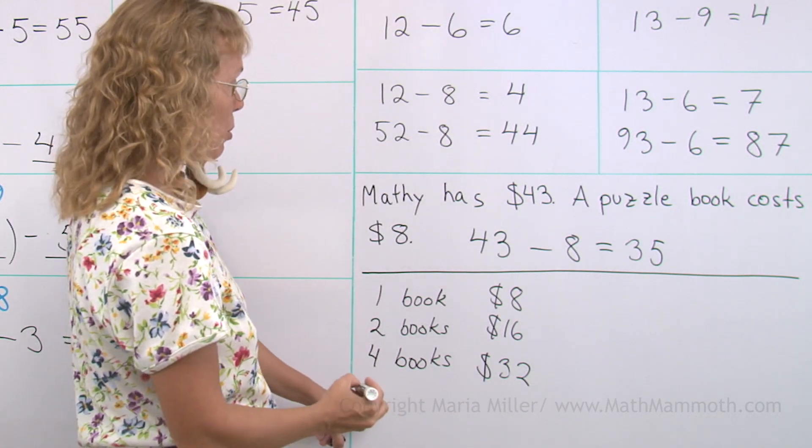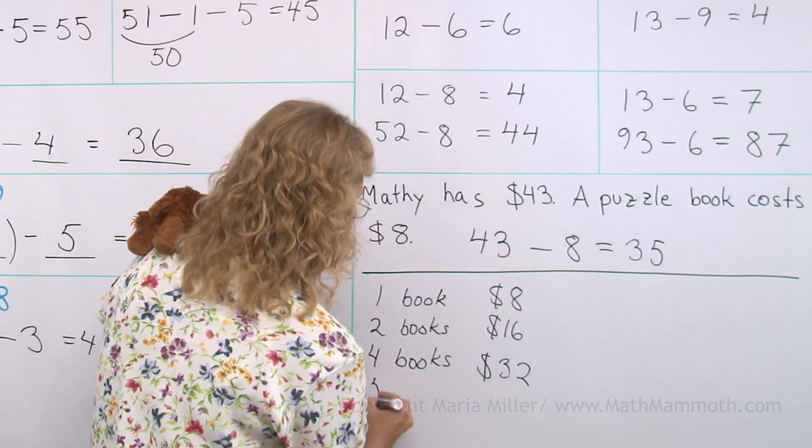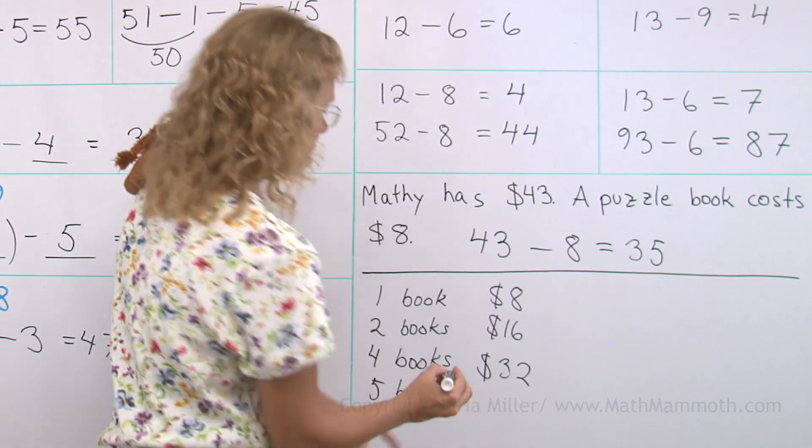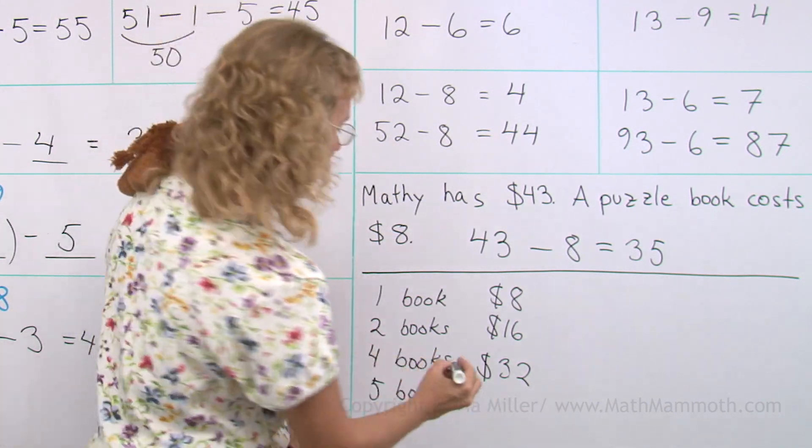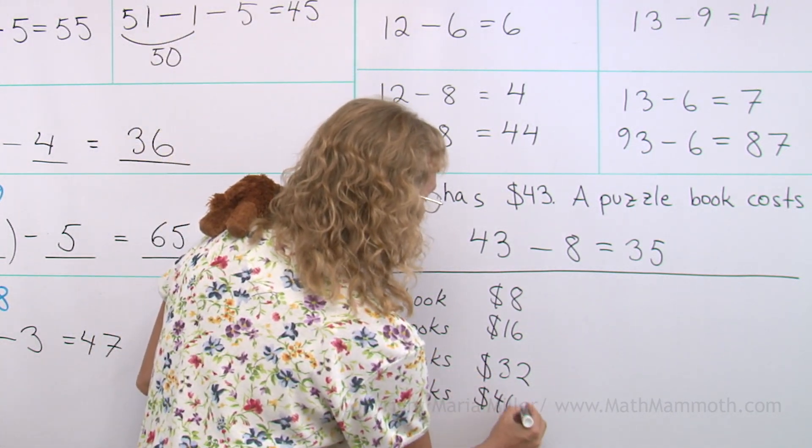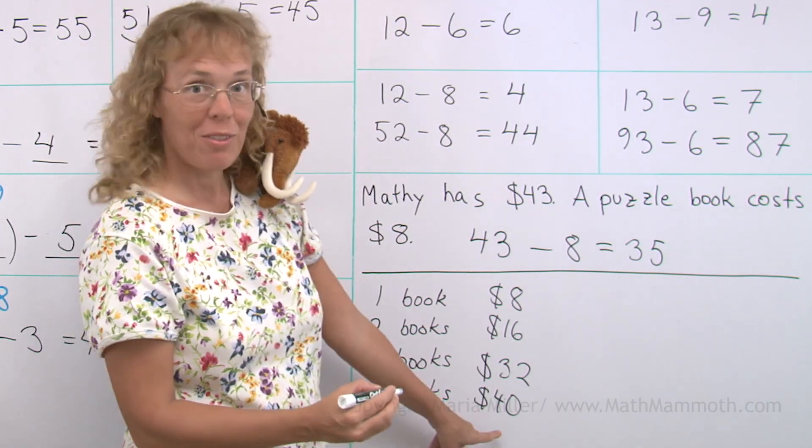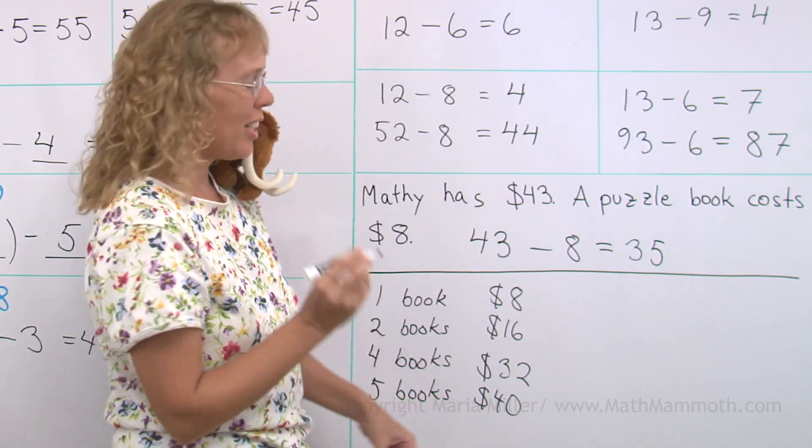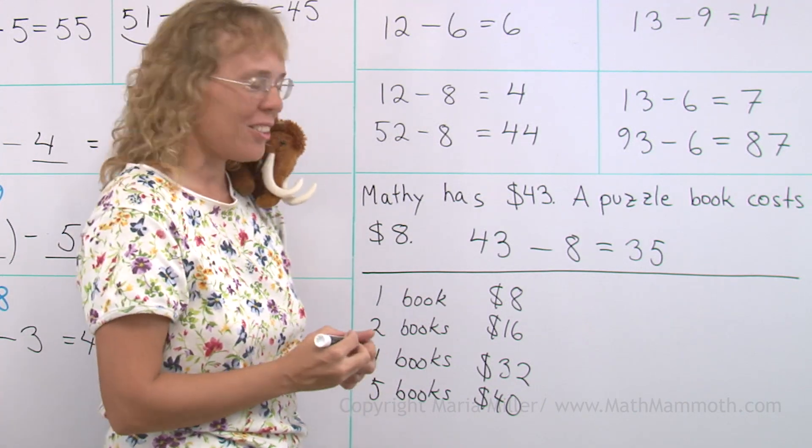He can buy four books, see? How about five books? Eight dollars more to that, we get 40. And then six books would be 48. So he cannot buy six books, but he can buy five books.